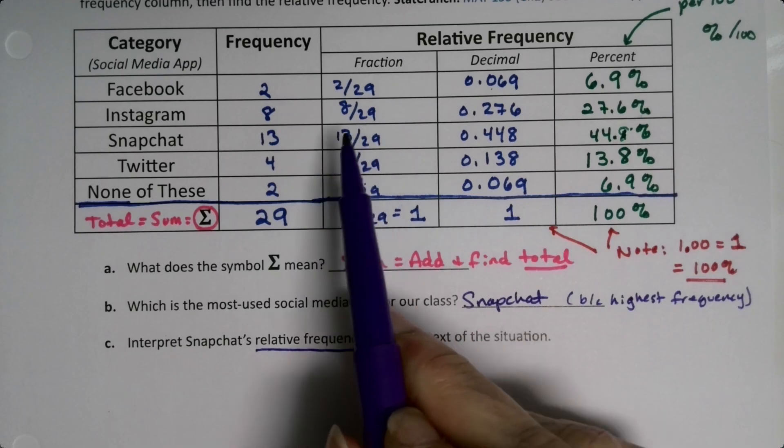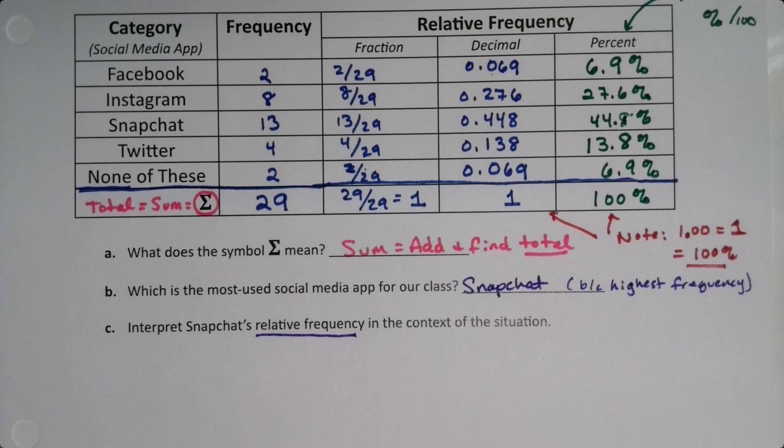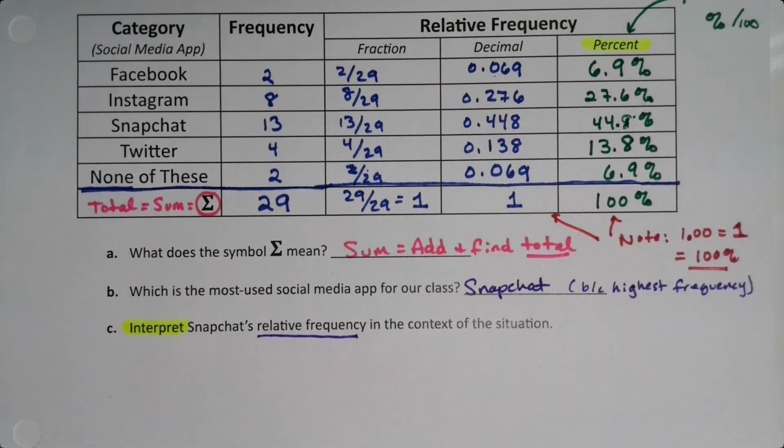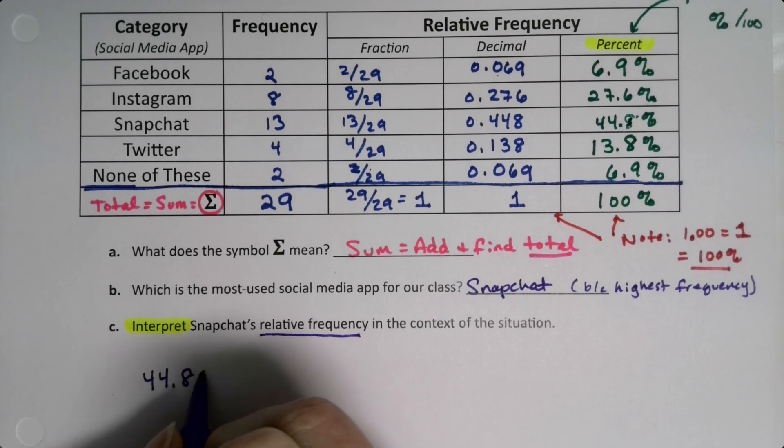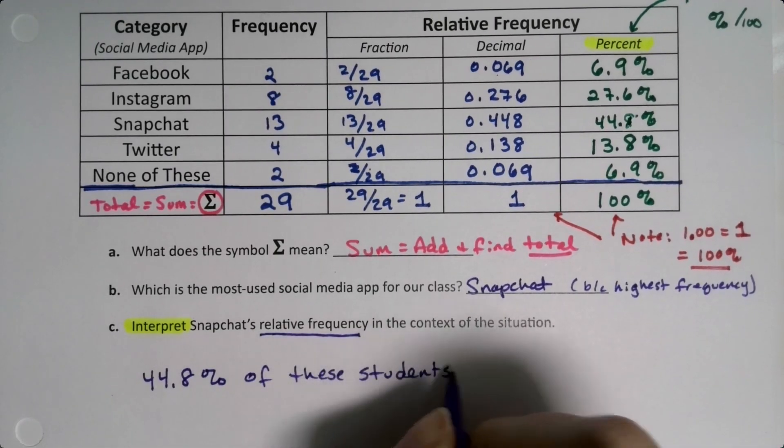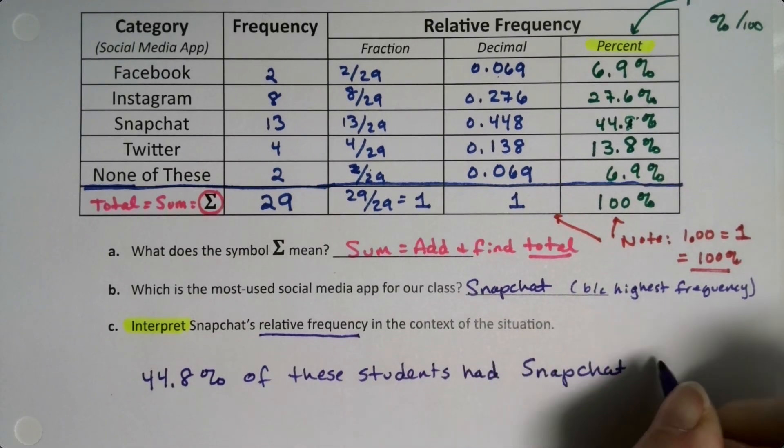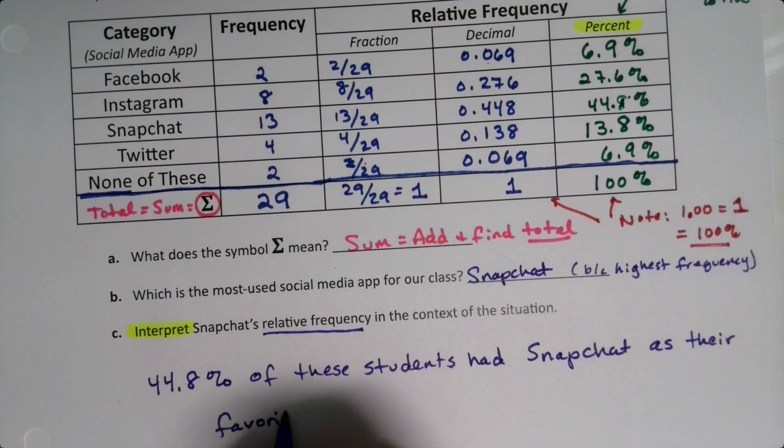Interpretation, honestly, we usually use percents. If we're going to have to write it out in English, that's what percents are useful for. So interpretation tends to be percents more than anything else. Okay. So if I look at Snapchat, I would say 44.8% of these students had Snapchat as their favorite social media app.